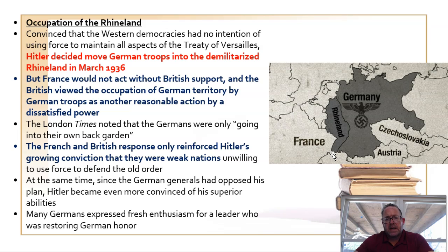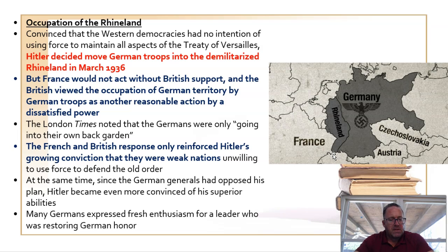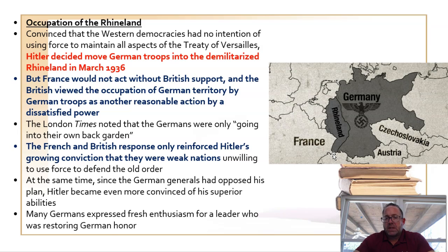France was terrified but did not feel confident enough to act without the support of their allies, including the United States and most specifically Great Britain, both of which were not interested in responding due to their policy of appeasement. This lack of action by France and Great Britain further solidified in Hitler's head the idea that they were terminally weak and that there was nothing he couldn't squeeze out of them.